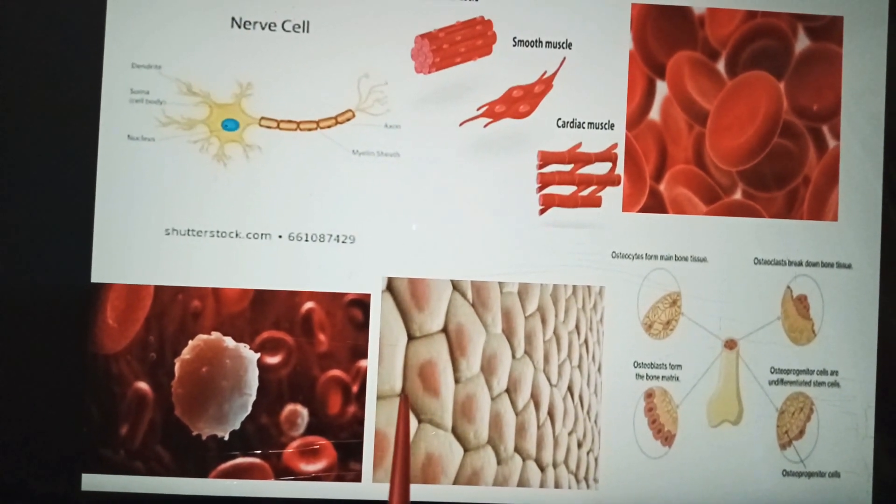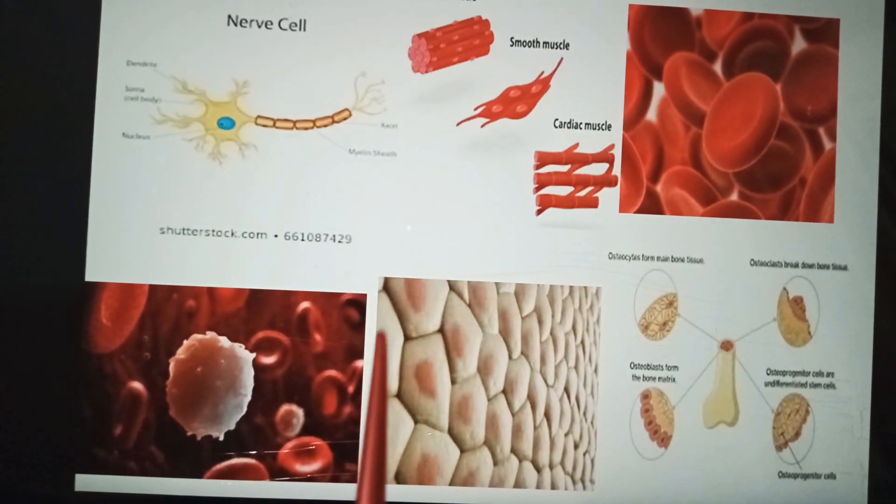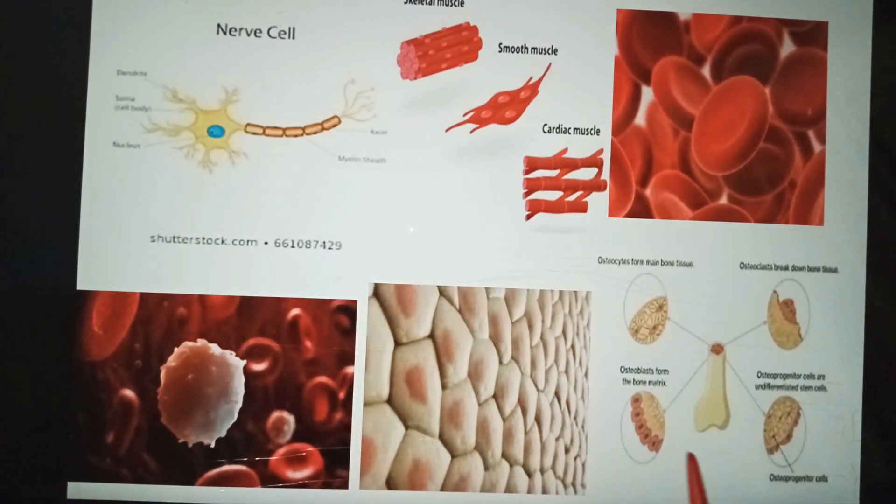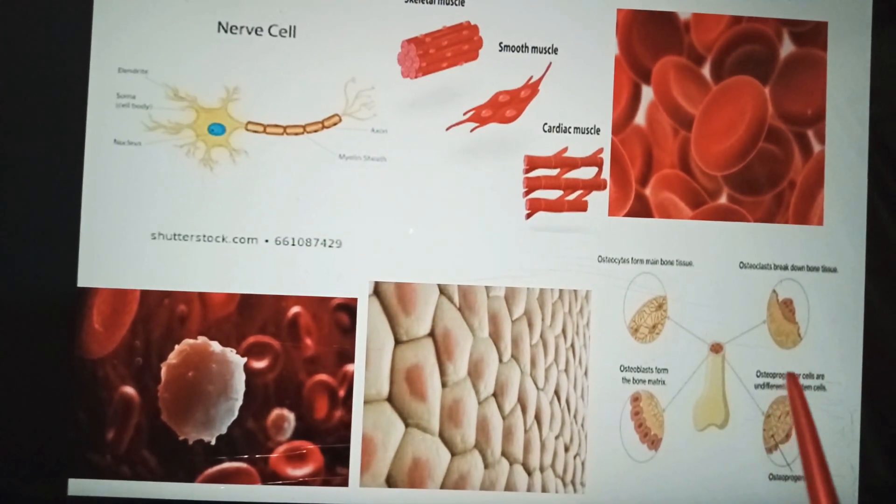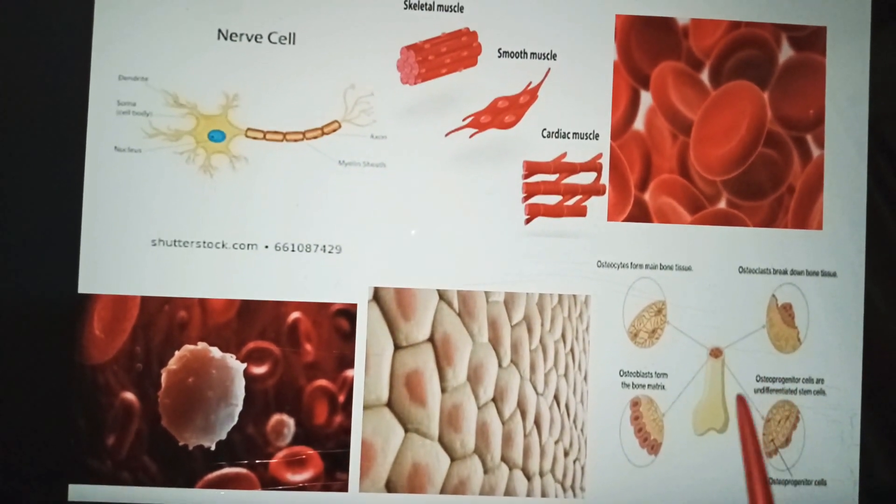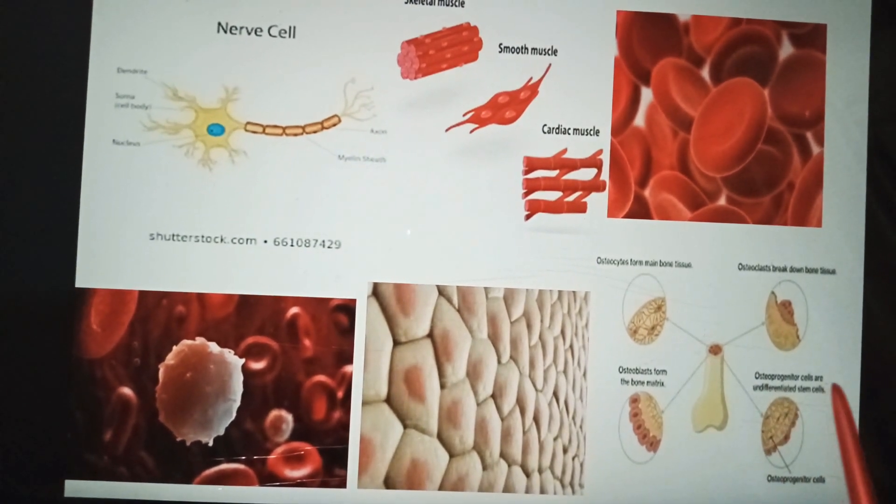Some skin cells act as a physical barriers against foreign materials and some as receptors for temperature, touch, and pain. The cells of bone deposit calcium in their extracellular spaces to make the bone tough and thus contribute to the supporting role of bone.